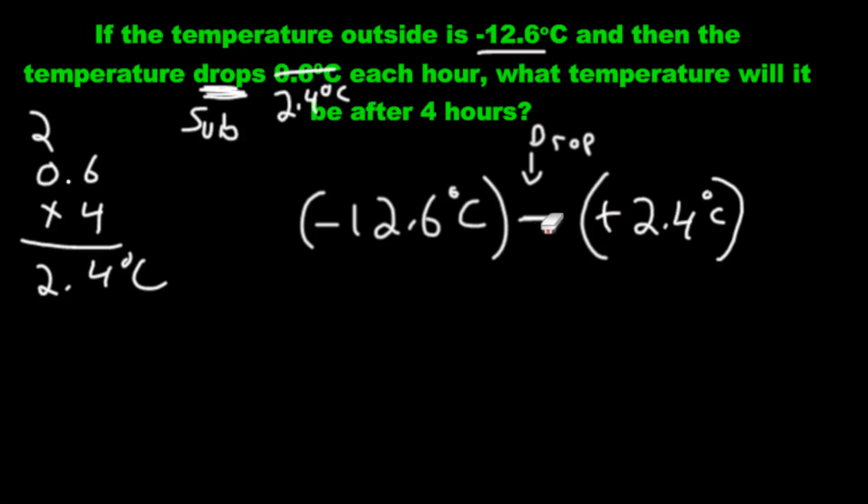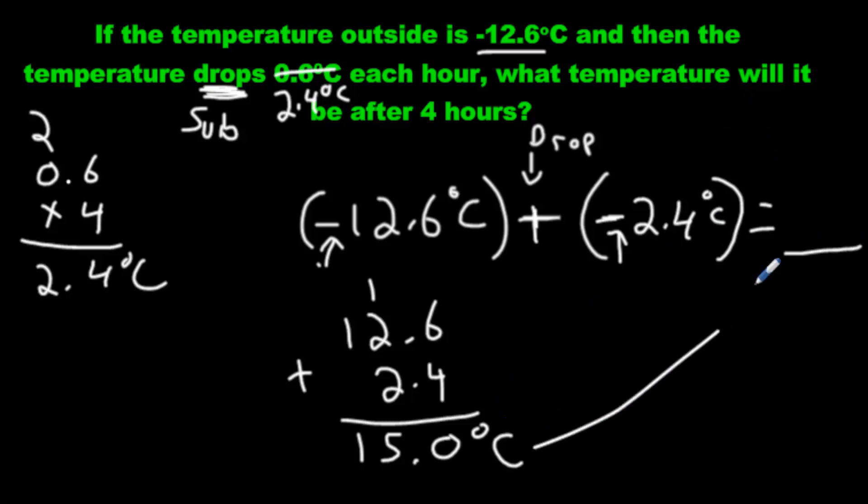Now what? We can't subtract. Every subtraction question has to be turned into an addition one. That was the strategy we learned. How do we do it over here? Negative, positive. We flipped them. Yes, that's what's going to work. So we're going to flip the signs. This one becomes the negative, and this one becomes the positive. We just flipped them around. Now we can look at the symbols and say, they're the same, so we have to add. We're going to add 12.6 plus 2.4, making sure the decimals are lined up. We're going to go 15.0 degrees Celsius is our final answer. That's what temperature it will be after four hours.